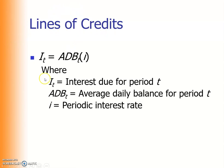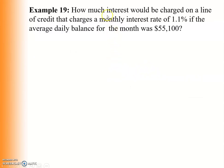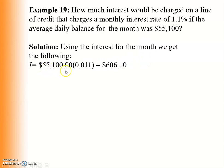For lines of credit, the average daily balance is determined first, then interest accrued over a time period is calculated based on that balance. For example: how much interest would be charged on a line of credit with a monthly interest rate of 1.1% if the average daily balance for the month was $55,100? The interest charged is $55,100 × 0.011 = $606.10.